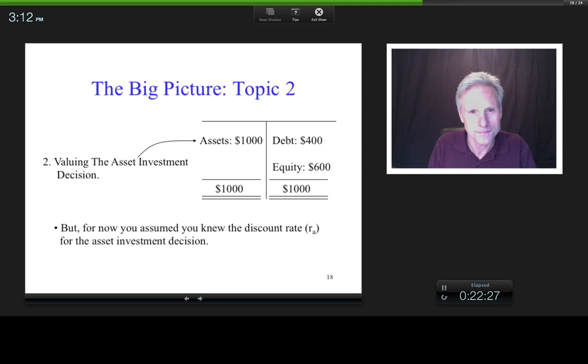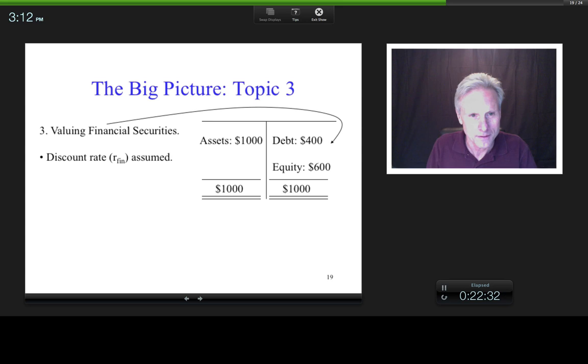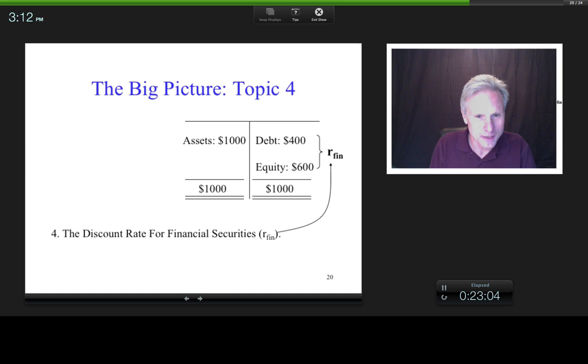Third topic is now we'll move to the right hand side of the balance sheet. We'll say, hey, why is debt worth $400? And why is equity worth $600? And again, we're just going to apply time value of money principles. And so I'm not going to magically change how we measure value. We're going to need two things. Well, what two things will we need? Cash flows and a discount rate. But again, for now, we'll be assuming that we know the discount rate for financial securities. Then we'll stay at the right hand side of the balance sheet and we'll say, well, what is the discount rate for financial securities?